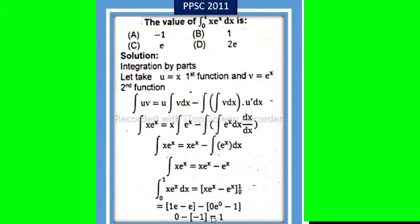Lower limit: minus 0 times e^0 equals 1, so 0 times 1 minus e^0 equals 1, that is minus 1. So 0 minus minus 1 equals plus 1. Option B is correct, that is 1.